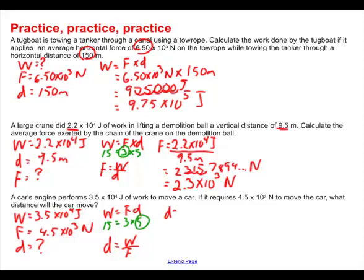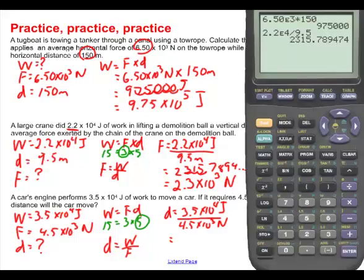So the distance is going to be the work divided by the force. So the work was 3.5 times 10 to the 4th power joules, divided by a force of 4.5 times 10 to the 3rd power newtons, and what are we going to get? So calculator time, we have 3.5 second function exponent. Exponent, it's the 4th power,